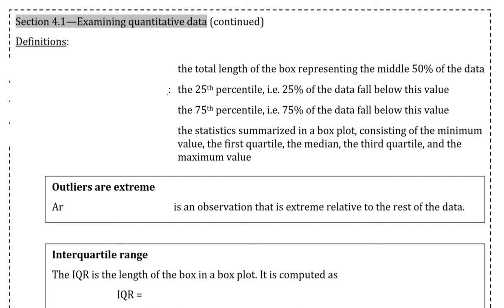Remember that as defined in the previous video for section 4.1, a box plot is a graph for quantitative data that summarizes a data set using five statistics while also plotting unusual observations. Those five statistics make up what is known as the five-number summary. The statistics summarized in a box plot, consisting of the minimum value, the first quartile, the median, the third quartile, and the maximum value.